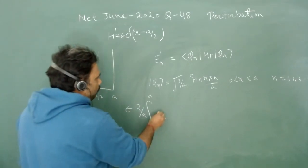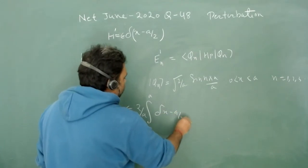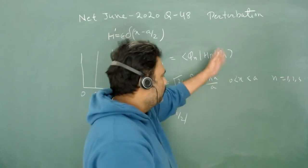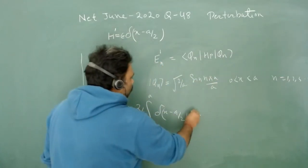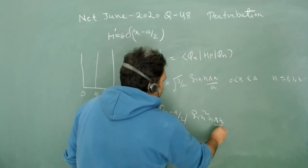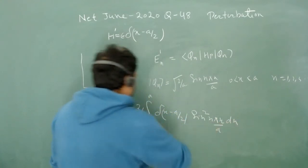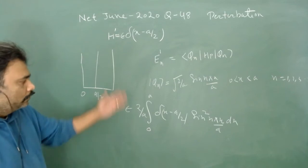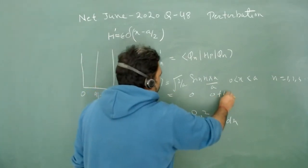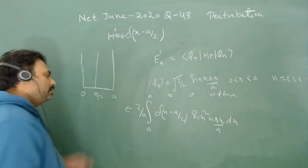The perturbation term is delta(x - a/2). One is bra phi_n, another is ket phi_n. So we have sin^2(n*pi*x/a) dx, and we have to integrate from 0 to a. We know this is zero otherwise, so this integration is very simple.